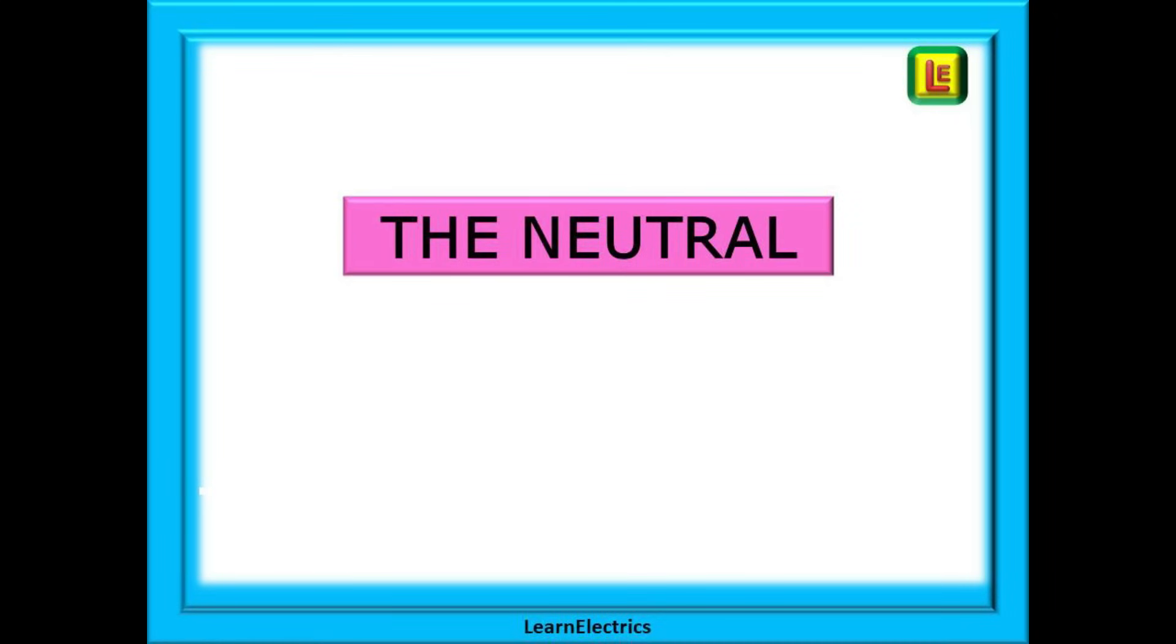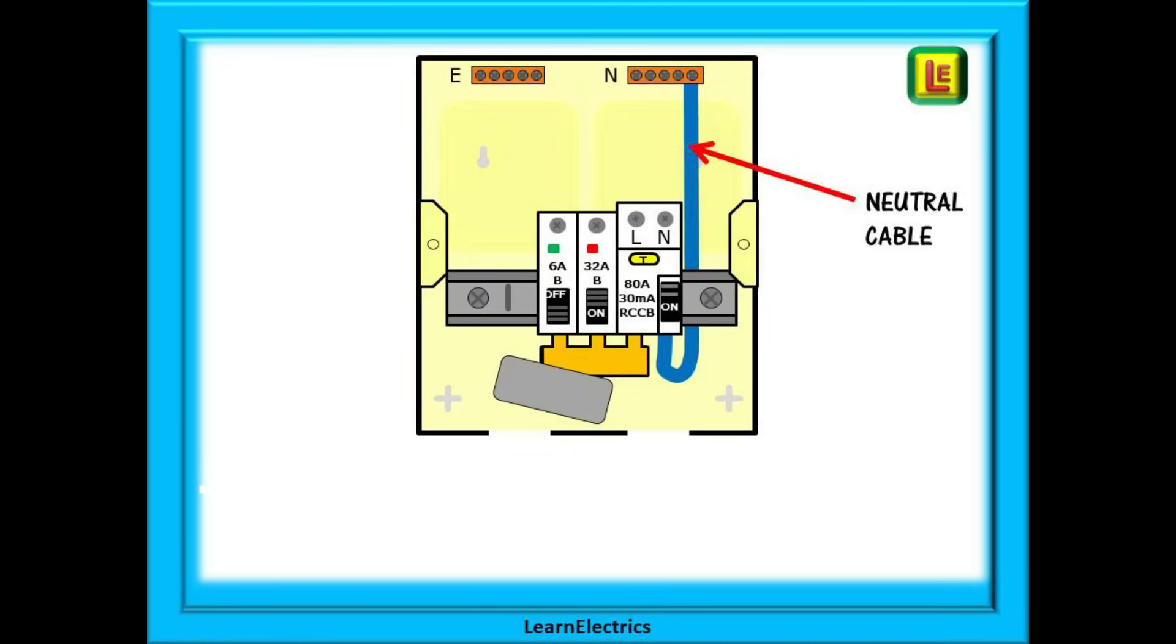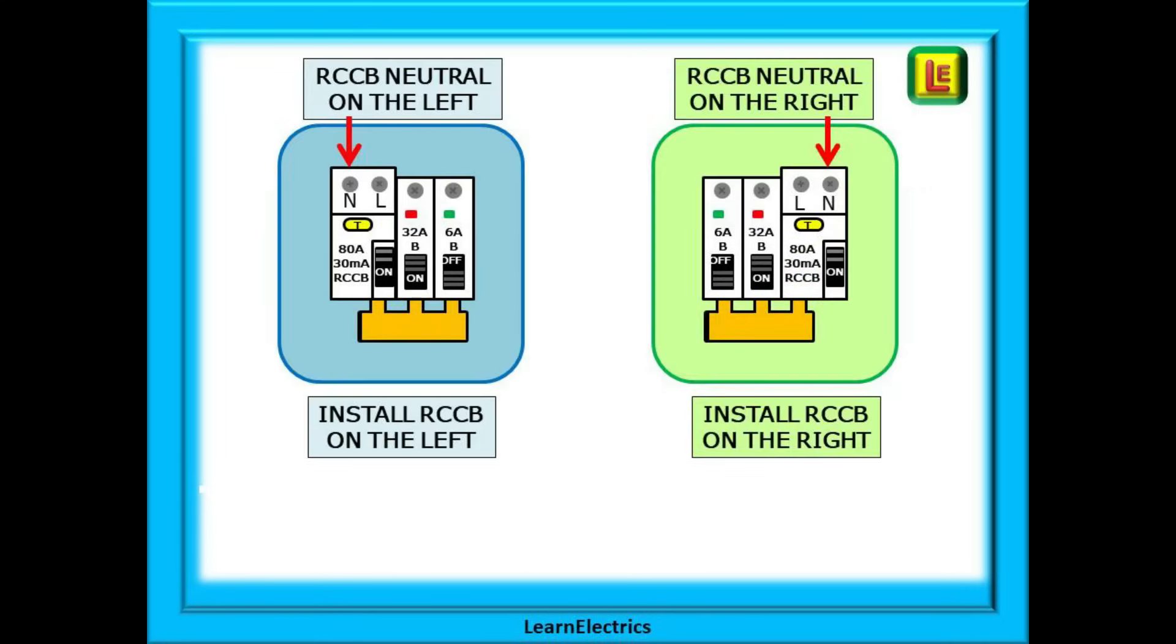Let's consider the neutral next and this does matter. Most garage units will come with a pre-cut neutral cable that should be connected from the bottom of the RCCB on its neutral side into the neutral bar. Pay attention to the position of the neutral connections on the RCCB or RCD.